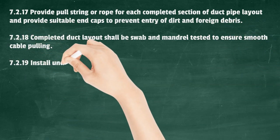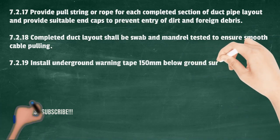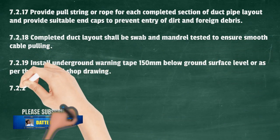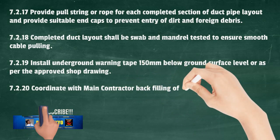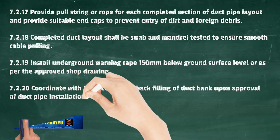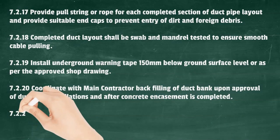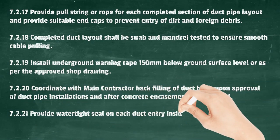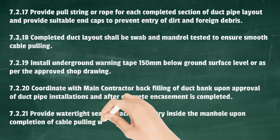Install underground warning tape 150 mm below ground surface level or as per the approved shop drawing. Coordinate with the main contractor for backfilling of duct bank upon approval of duct pipe installations and after concrete encasement is completed. Provide a watertight seal on each duct entry inside the manhole upon completion of cable pulling works.